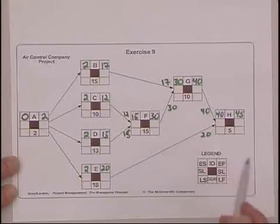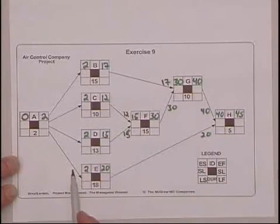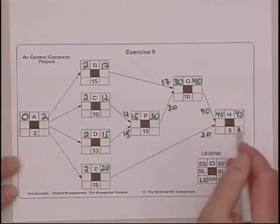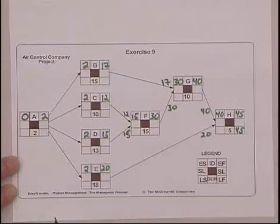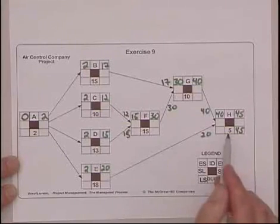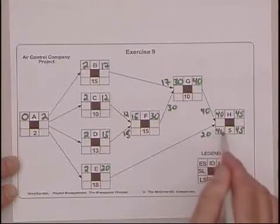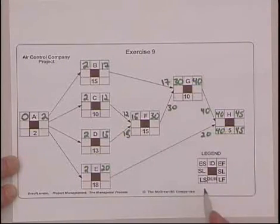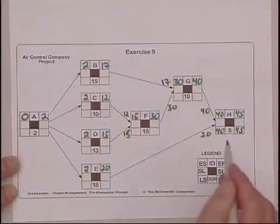Now the late finish, we go backwards and this time we subtract. And instead of choosing the larger number, we choose the smallest number when we're forced to make a choice. So the latest H can finish without delaying the project obviously is 45. 46 would mean it's a day late. So the late finish and the early finish for the last activity are always the same. We subtract 5 from 45 and the late start for H is 40. The late start and the late finish is the latest this activity can start without delaying the project.